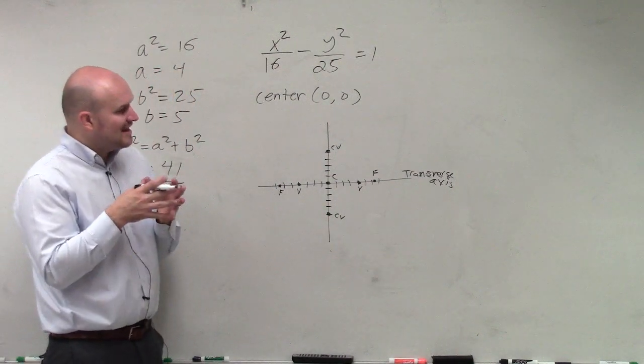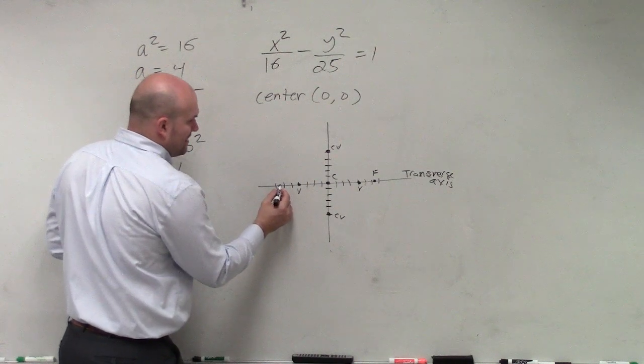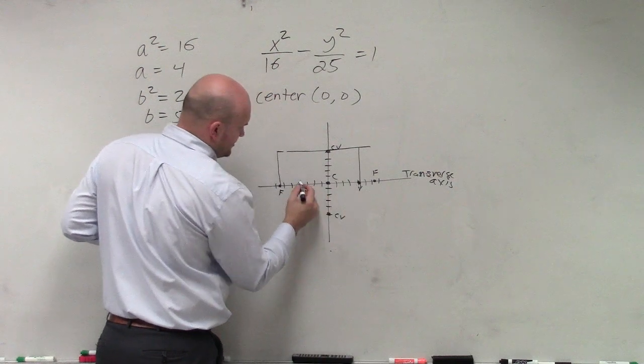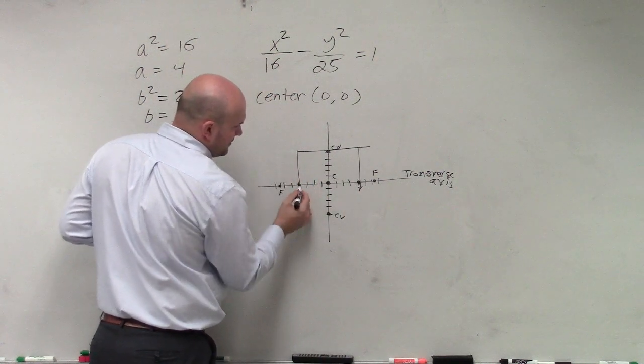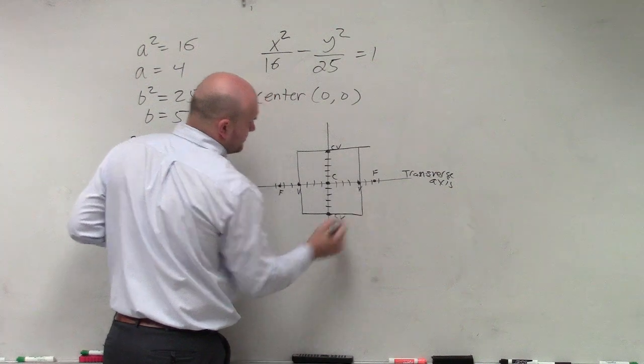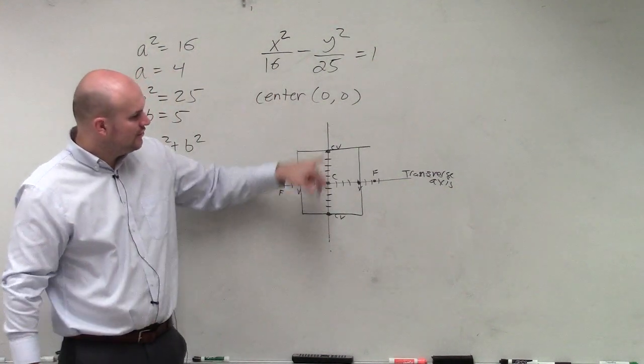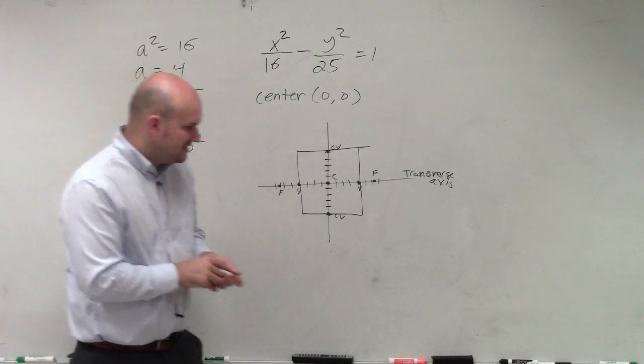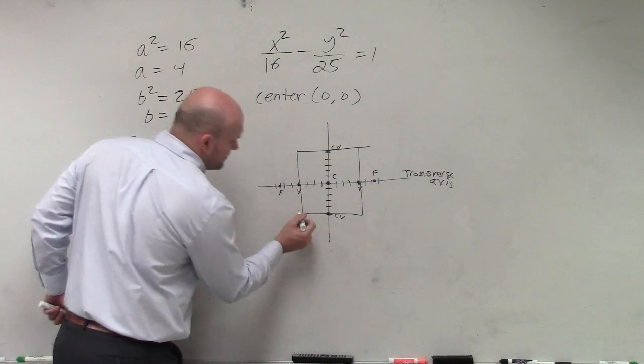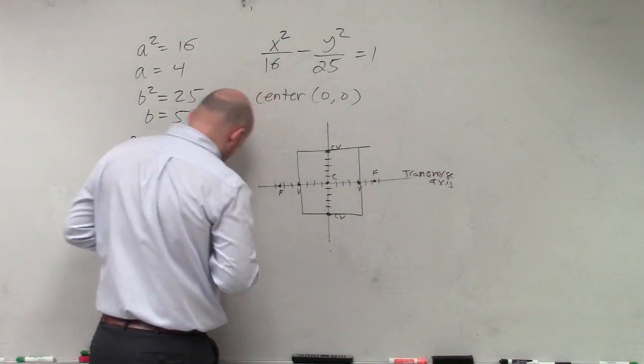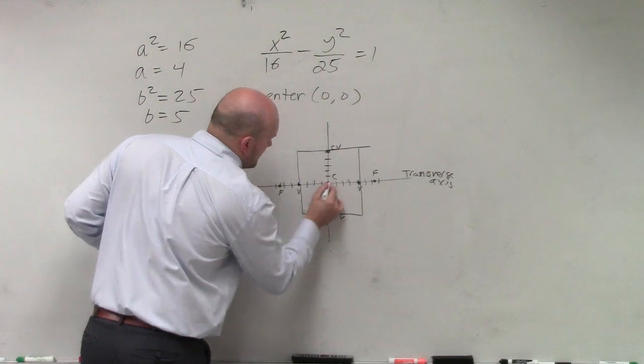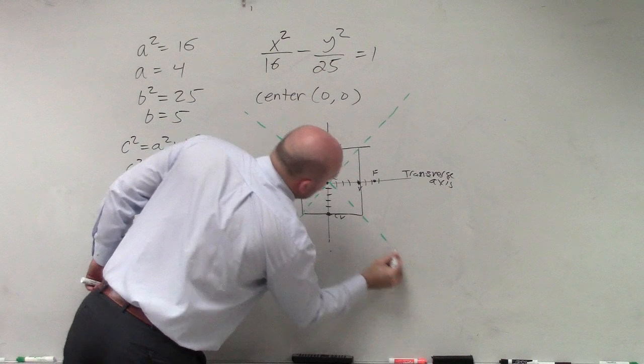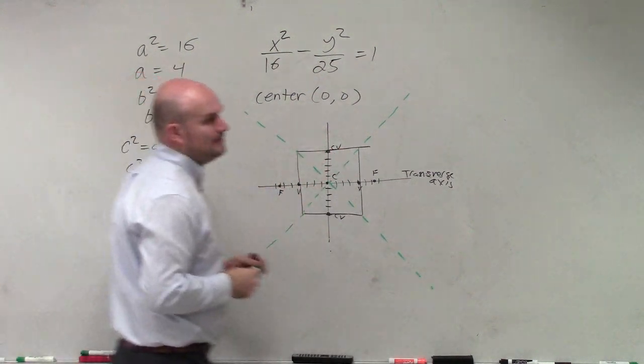Now, to find the asymptotes, the best thing to do is to create a box with your co-vertices and your vertices, not your foci. So create a little box with your co-vertices and your vertices. Then, what you can do is connect your corners going through your center.